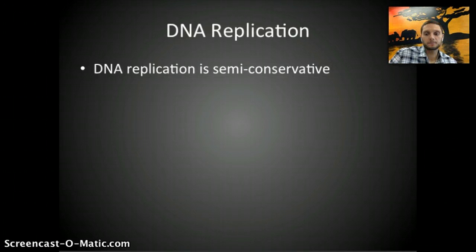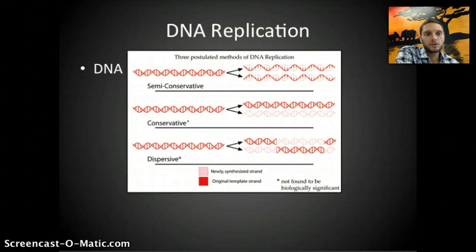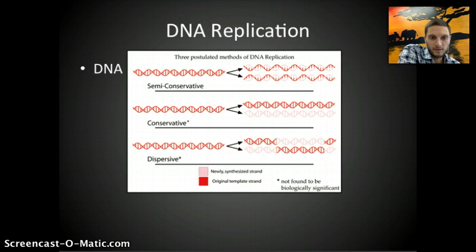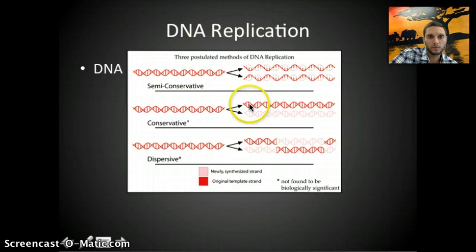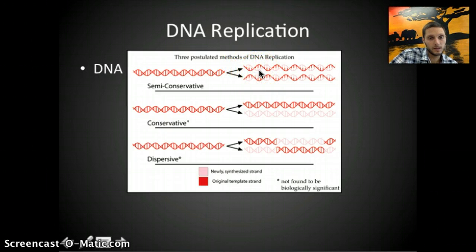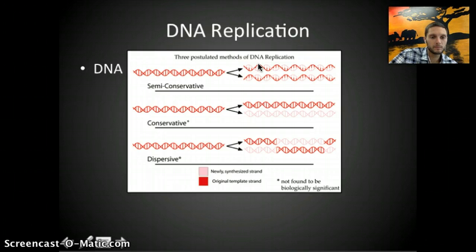What semi-conservative means is that each original parent or template strand is preserved so that in the two new copies of DNA, there is an original parent template strand and a newly synthesized strand. Rather than a conservative approach where we get one completely original and one completely new, one strand of the DNA double helix is found in each of the two new DNA molecules.